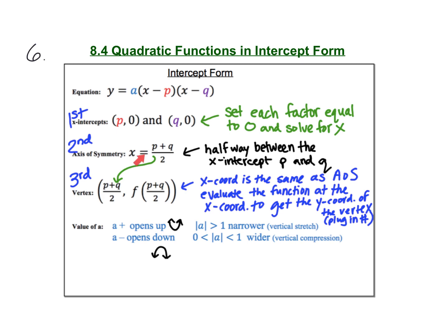With the axis of symmetry, we also have the x-coordinate of our vertex. To get the y-coordinate of the vertex, you just evaluate the function at the x-coordinate. So whatever number you get for x, you plug that number into the equation and that'll give you the y-coordinate of the vertex.